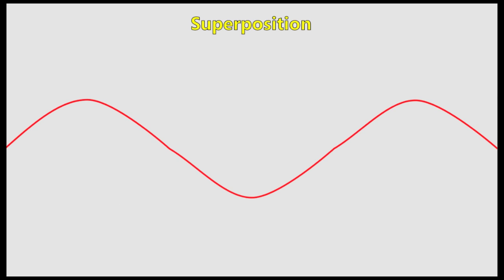Superposition, similar to phase difference, is when the two waves combine when they pass through each other. The principle of superposition states that when two waves meet, the total displacement at a point is equal to the sum of the individual displacements at that point. If the waves are completely in phase, you get reinforcement. When they have a complete out of phase or 180 degrees, you get cancellation.